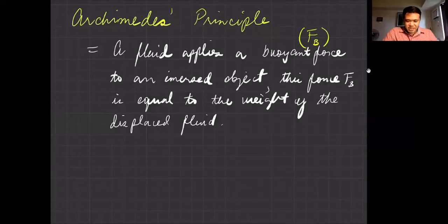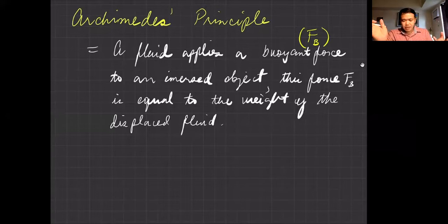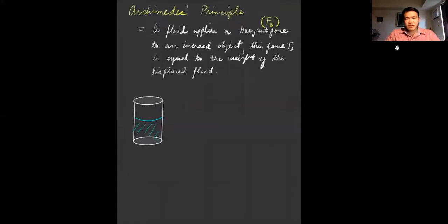Archimedes' principle states that a fluid applies a buoyant force to an immersed object. This force, F_B, is equal to the weight of the displaced fluid — again, the weight of the displaced fluid.